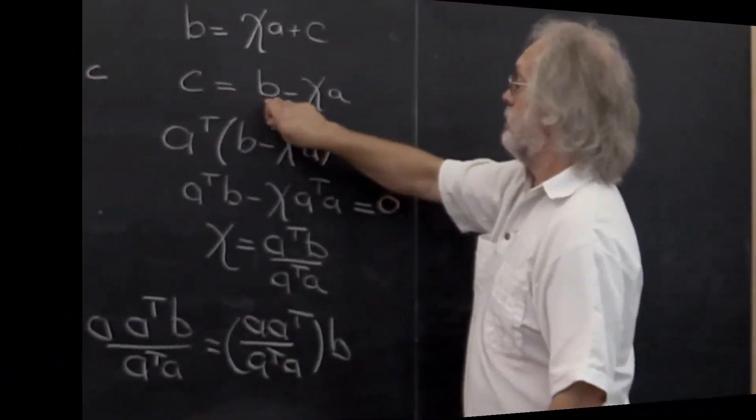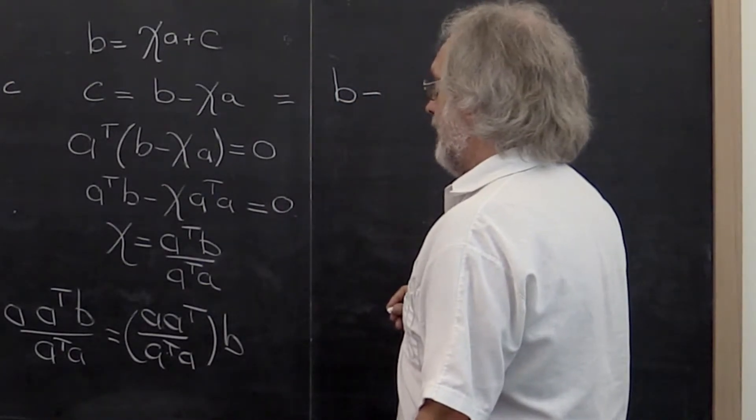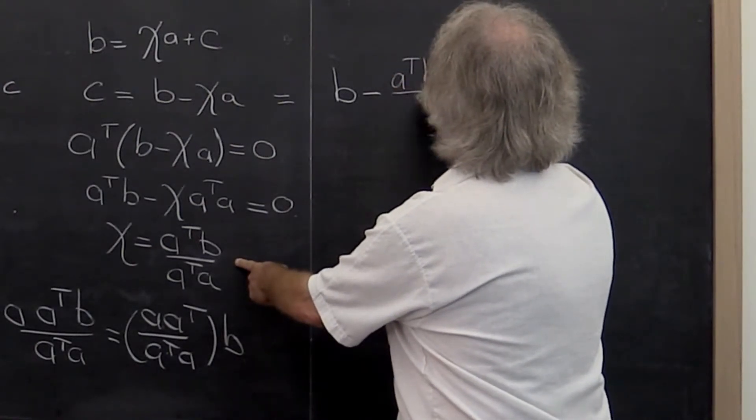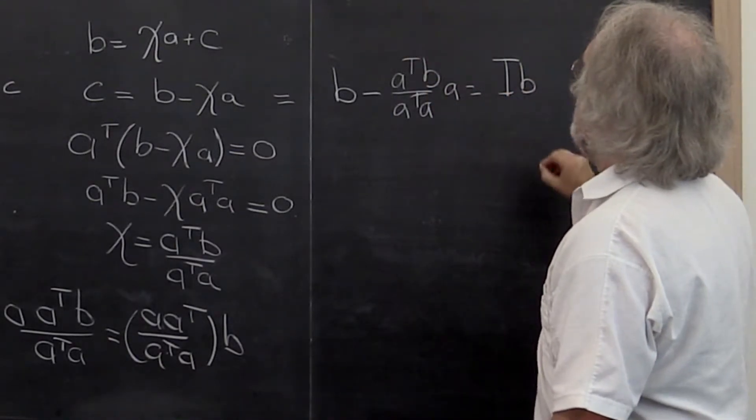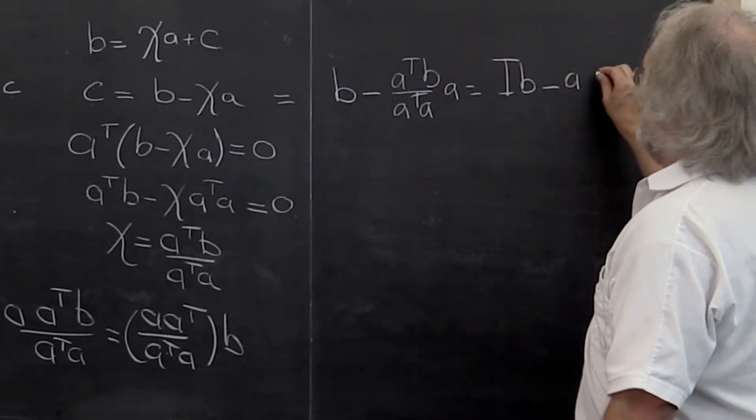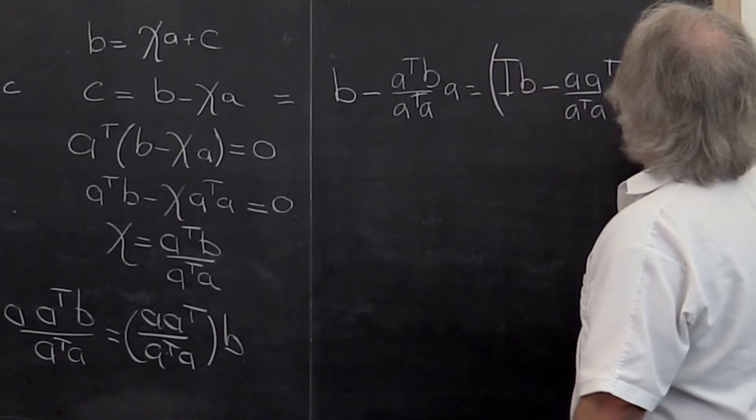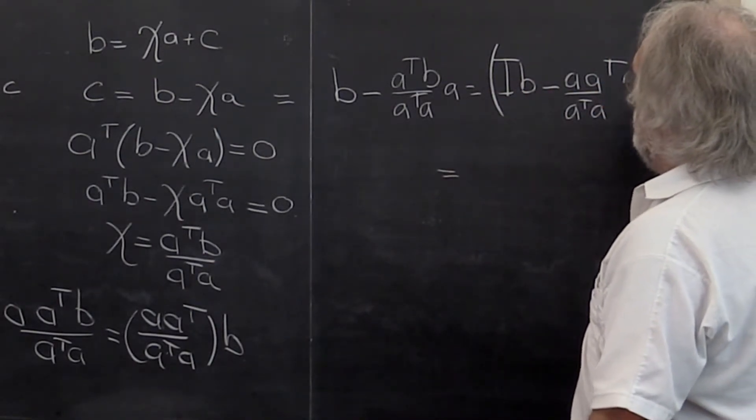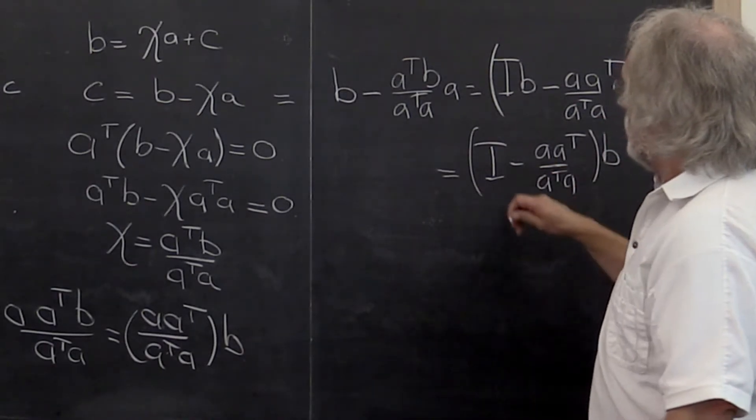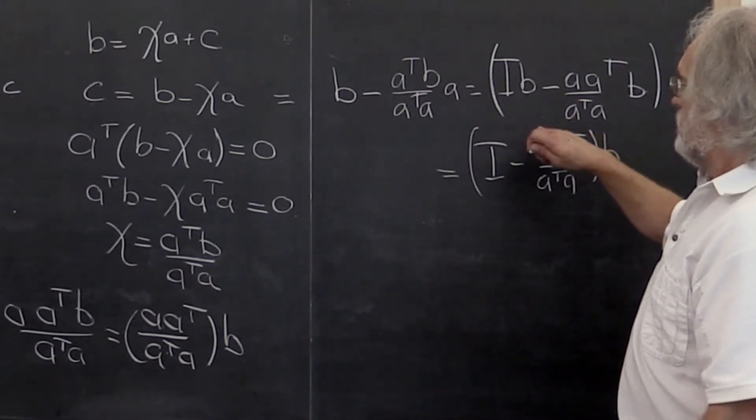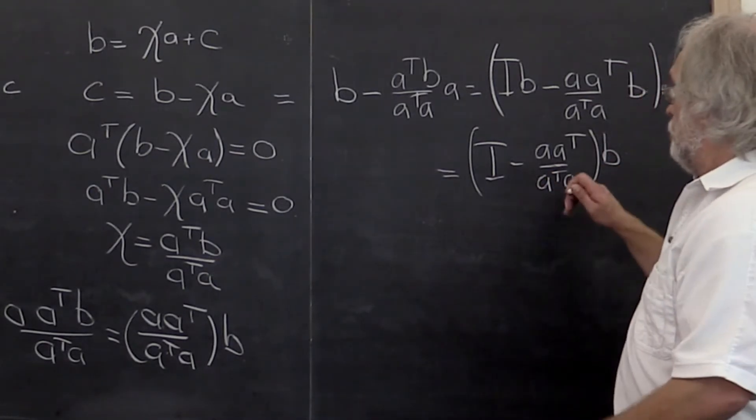And that we get from the fact that C is equal to B minus chi times A, which now is equal to B minus A transpose B divided by A transpose A times A. We can then rewrite this as the identity times B minus, and then we can do the same trick of rearranging, and bring B out. What we have now is the matrix that when applied to a vector B tells you what the component of that vector B is orthogonal to vector A.